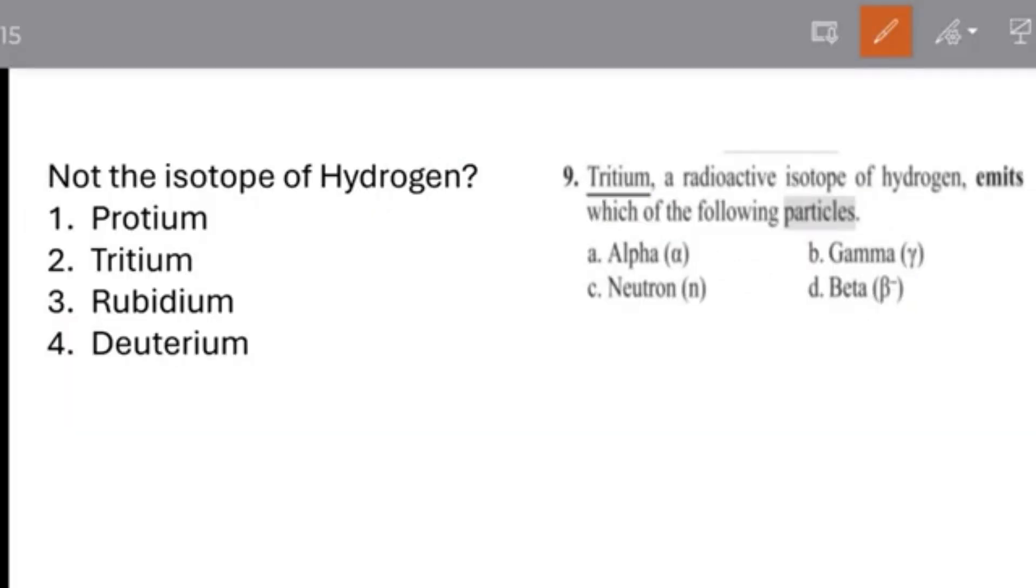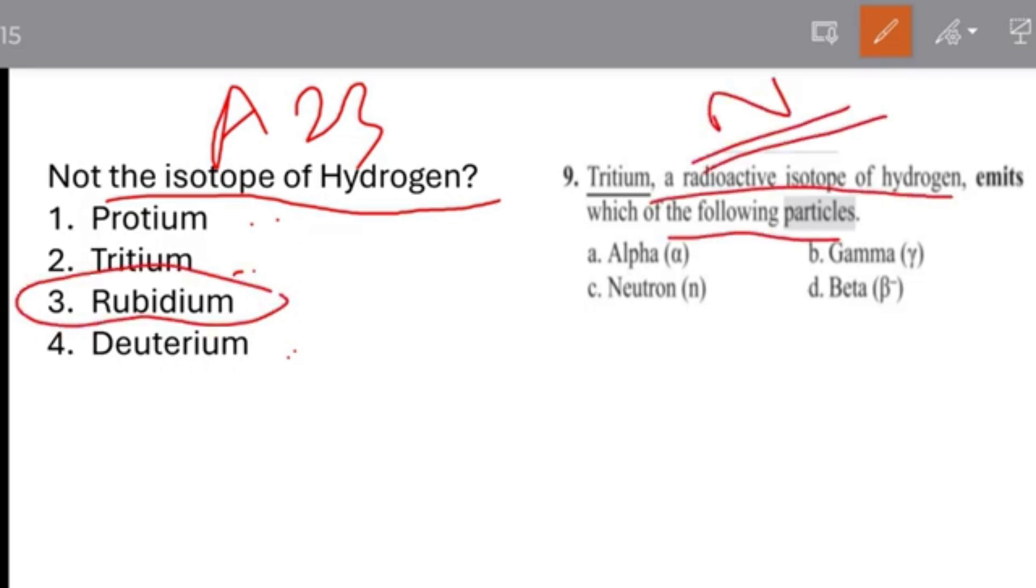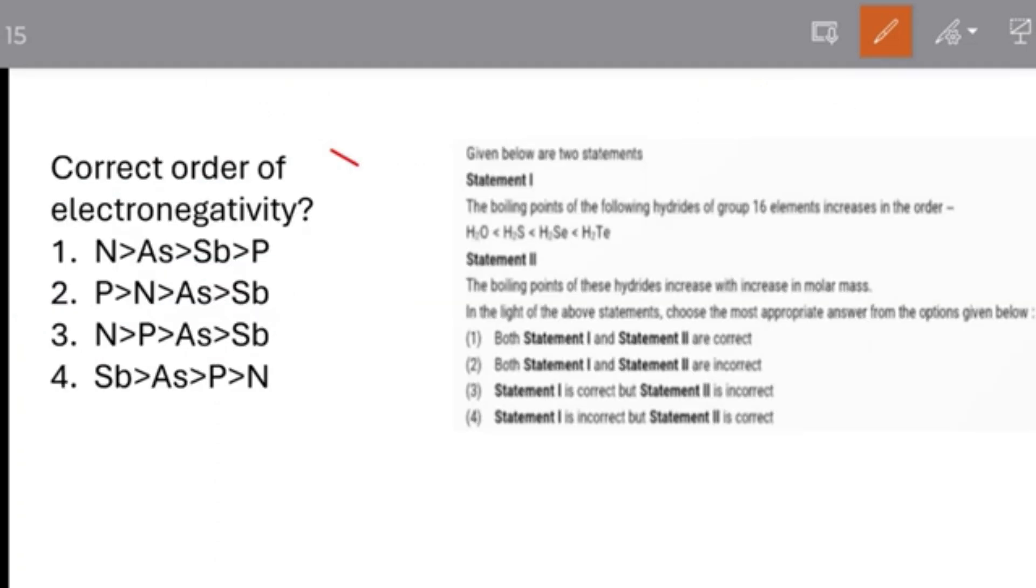Next, see from hydrogen. In AIIMS BSc Nursing 2023, this question came - not the isotope. What is not the isotope of hydrogen? So Rubidium will be the answer. A very easy question. And this question came in NEET - tritium, a radioactive isotope of hydrogen, emits beta particles. See, from hydrogen chapter, a very easy question. The number of students has also increased, so the competition is increasing day by day. You have to beat the competition by working smartly.